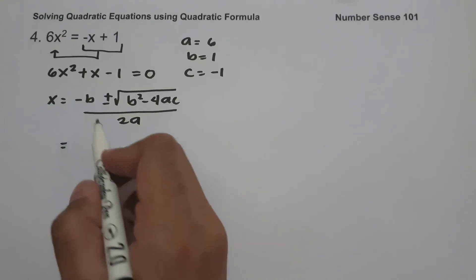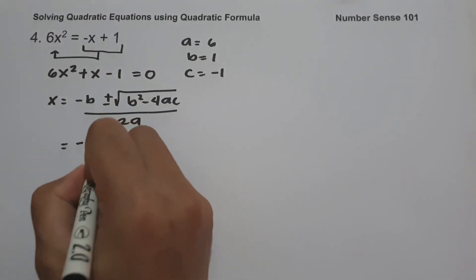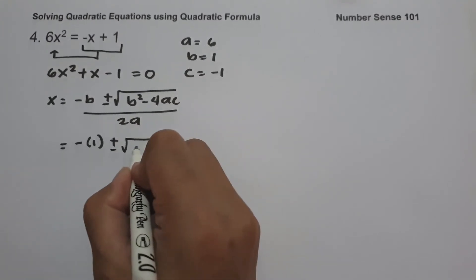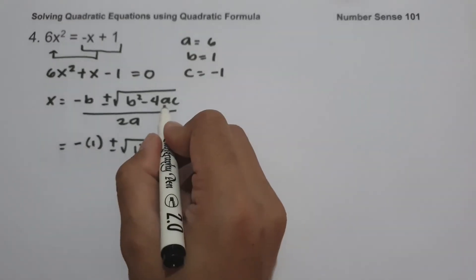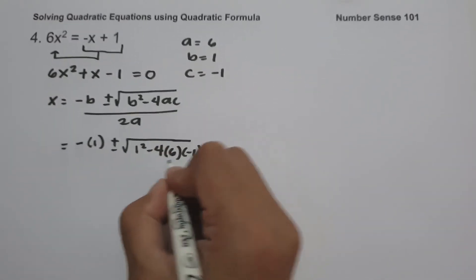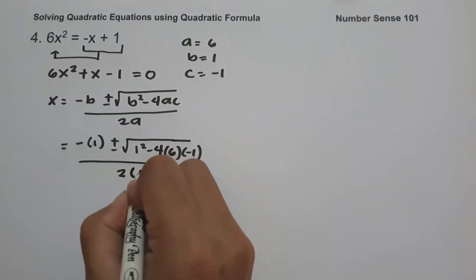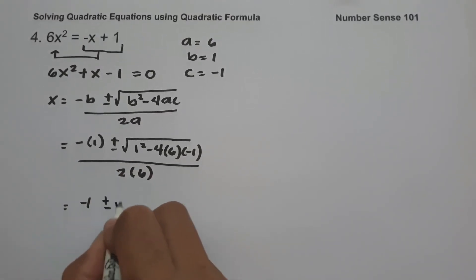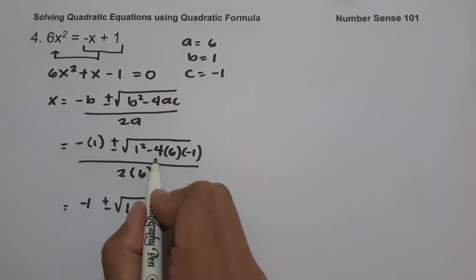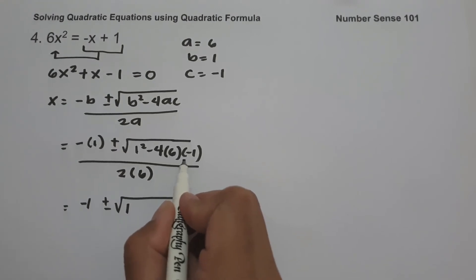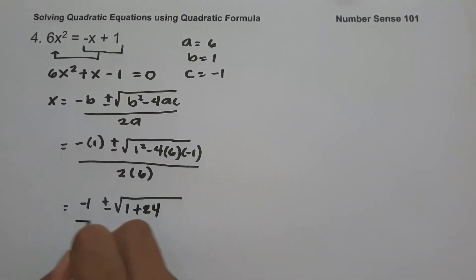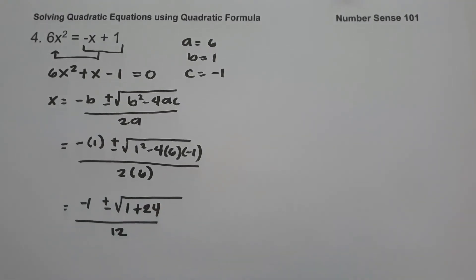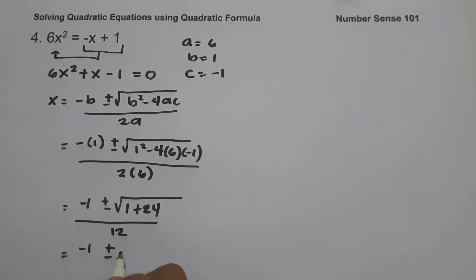Let us substitute the values of a, b, and c. We have negative b, that is 1, so this will be negative 1, plus or minus square root of 1 squared minus 4 times a, that is 6, times c, that is negative 1, all over 2 times 6. Negative 1 plus or minus: 1 squared is 1; negative 4 times 6 is negative 24; negative 24 times negative 1 is positive 24; all over 2 times 6, that is 12. So we have negative 1 plus or minus the square root of 1 plus 24, that is 25, all over 12.